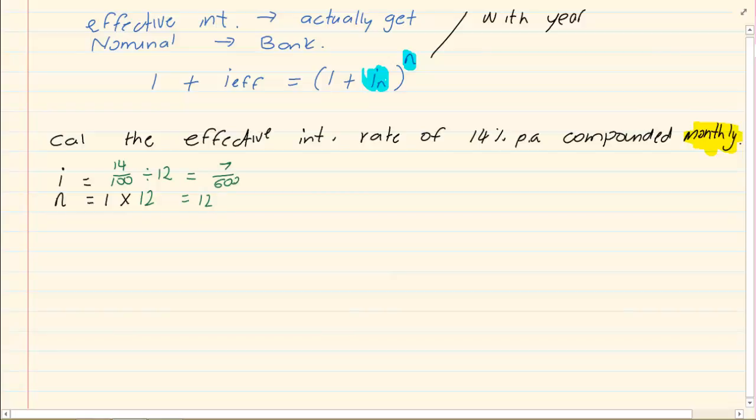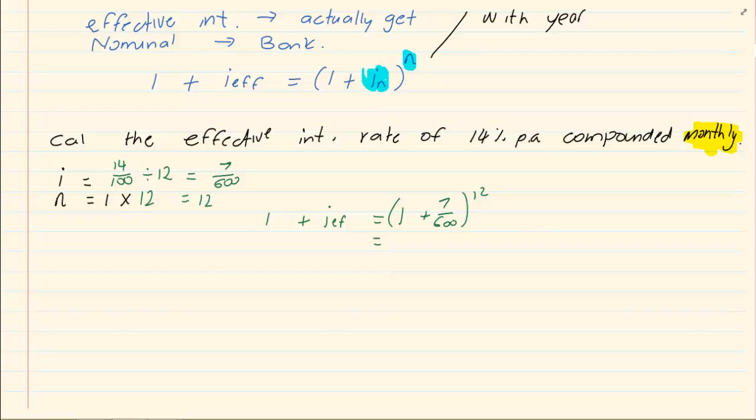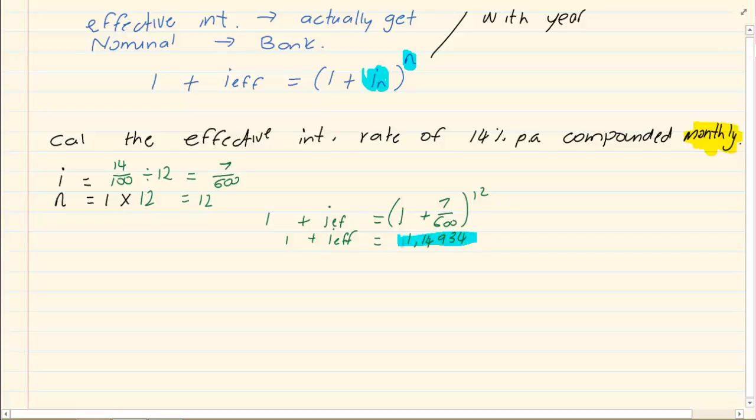Now let's go to the formula. We have 1 plus the effective interest rate is equal to 1 plus 7 over 600 to the power of 12. You can use your calculator. Notice again that I am rounding off to many places. Try and round off to 5 or 6 places. Because with interest if you round off too early it will give you the incorrect answer in the final answer.